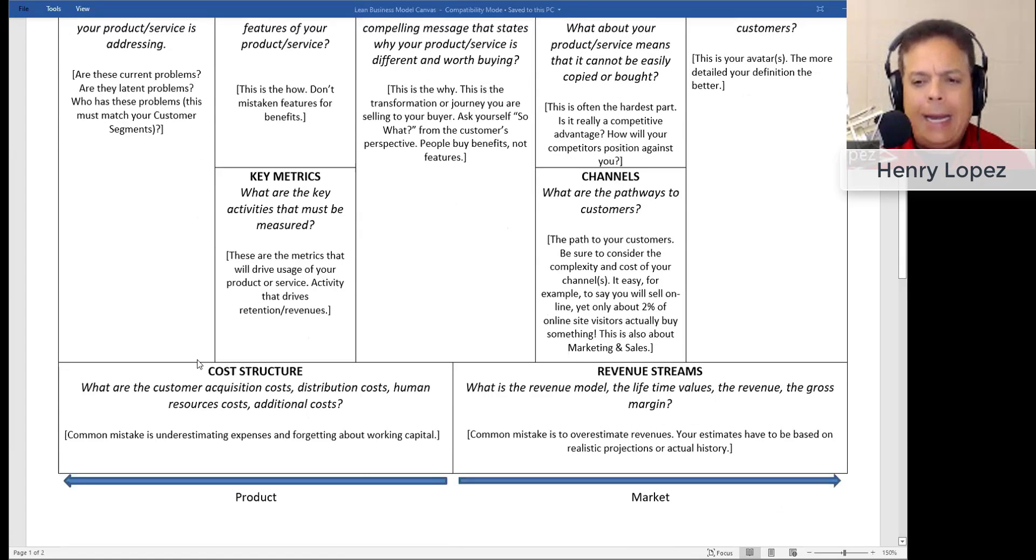Think about cost structure and all the different impacts as you roll this version out. Am I planning for enough working capital to get me through this MVP so I can hopefully make a profit or adjust or pivot and reinvest and launch my second MVP? Revenue streams are very important. What is the revenue model? How am I going to make money? Common mistakes: on the cost side, underestimating expenses and forgetting about working capital. On the revenue side, being overly optimistic about how much you can sell right away and making sure you price it right with enough margin.